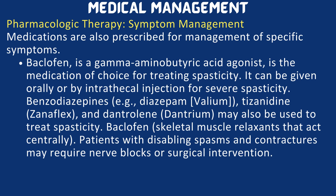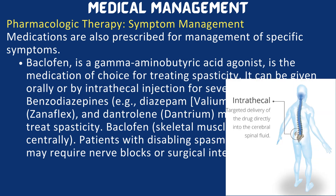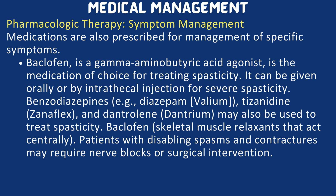Next is symptom management pharmacologic therapy. Baclofen, a gamma-aminobutyric acid agonist, is the medication of choice for treating spasticity. It can be given orally or by intrathecal injection for severe spasticity. Benzodiazepines such as Diazepam (Valium), Tizanidine (Zanaflex), and Dantrolene (Dantrium) may also be used to treat spasticity. Patients with disabling spasms and contractions may require nerve blocks or surgical interventions.